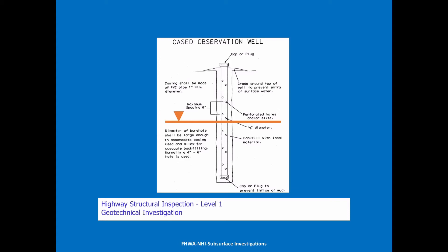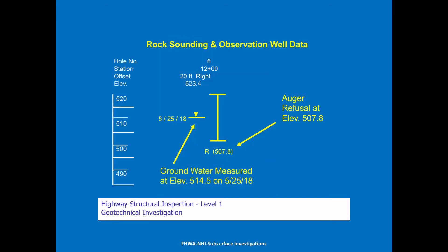The contractor needs to know what they're going to do to protect the excavation until they get their concrete poured and backfilled. Now for rock sounding and observation wells — rock sounding works similarly. Here we have a refusal: our auger refused at 5.07. We drilled down and recorded the date so the contractor knows it's probably in the wet season. We get more water in June and July; that's going to lower as it dries out.